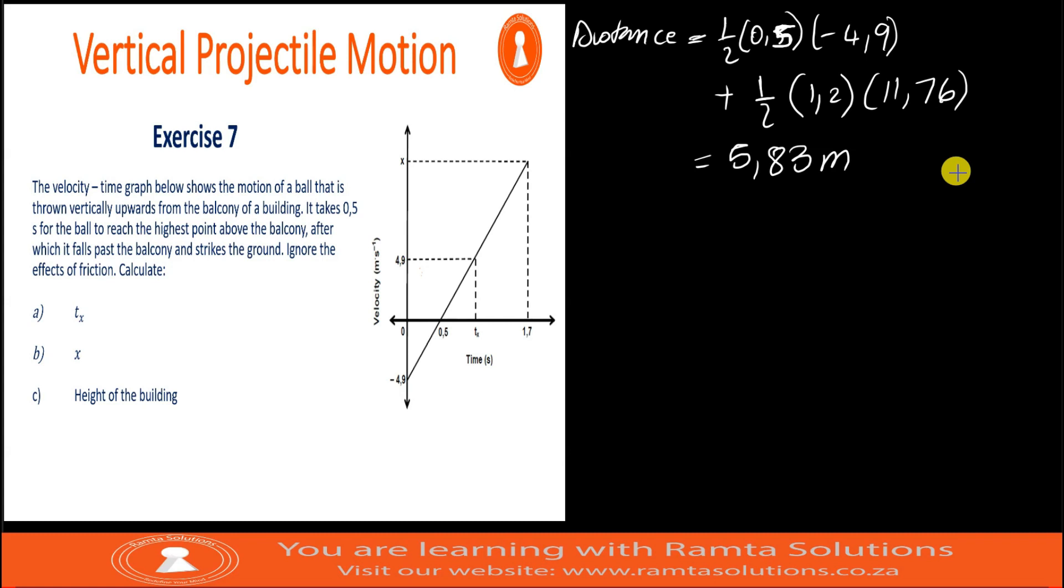Now, let's look at option 2. Option 2, we will be using equations of motion. We have initial velocity, we have final velocity, we have time. This means we are spoiled for choice. But I prefer using this one here.